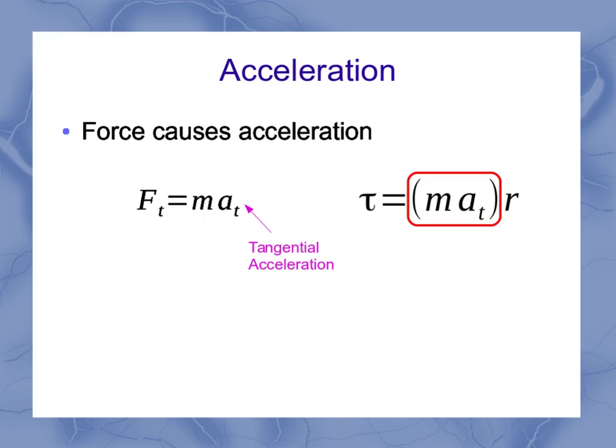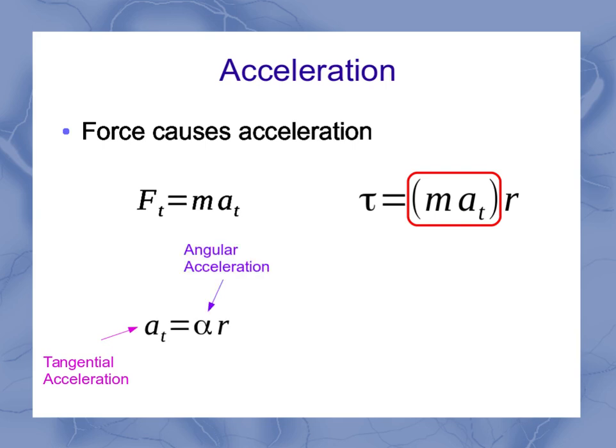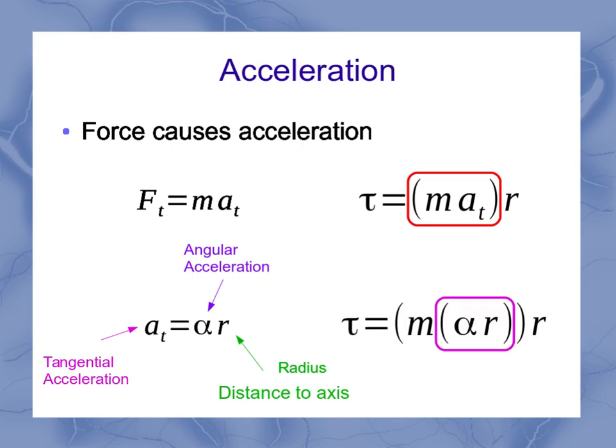I'm going to look more at this tangential acceleration. We had a relationship between the tangential acceleration and the angular acceleration, such that tangential acceleration was equal to angular acceleration times the radius. Or in this case, the radius is the distance to the axis of rotation. So I can place this into my equation, where now I'm replacing that a_t with alpha r.